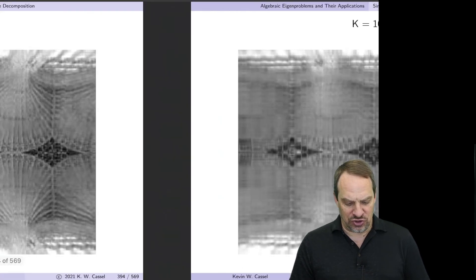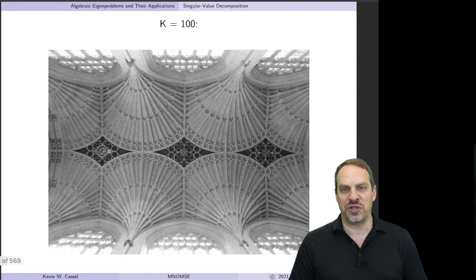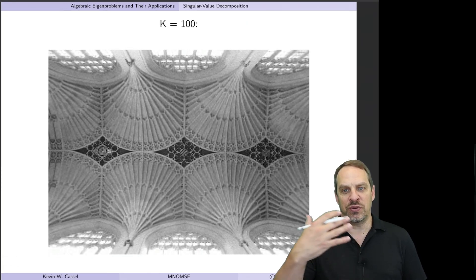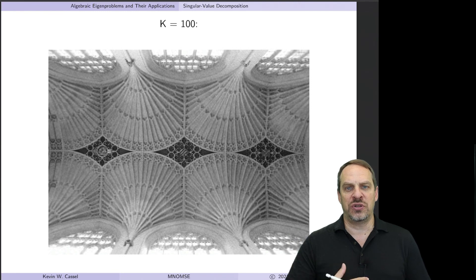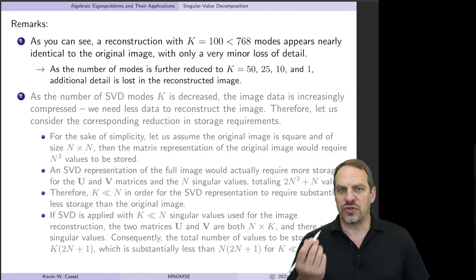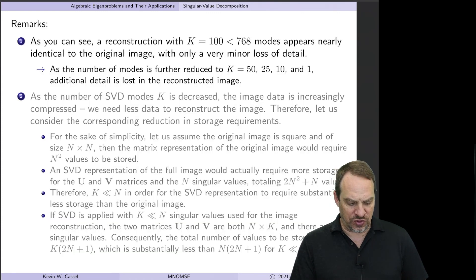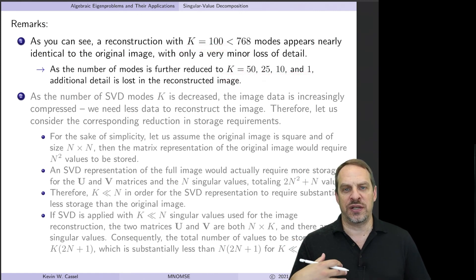But in any case, you can choose the level of accuracy in the reconstruction. Obviously, the more faithful the reconstruction, the more modes, the higher K you need, and the more data that needs to be stored in order to do that reconstruction. So as you can see, even just a K of 100 is relatively faithful to the original image. And you can reduce it further depending on how much detail and information you want to retain relative to how much data you are willing to store.